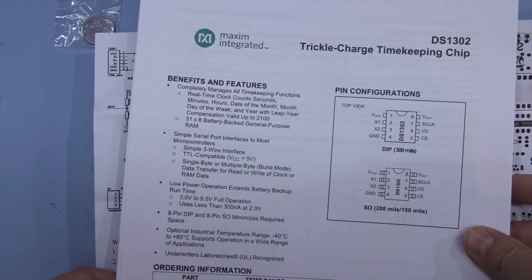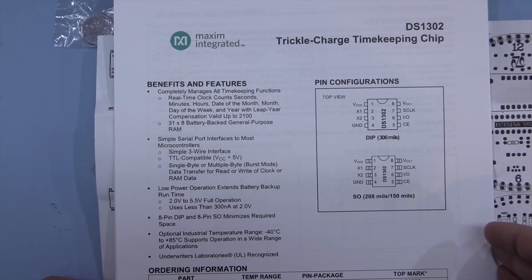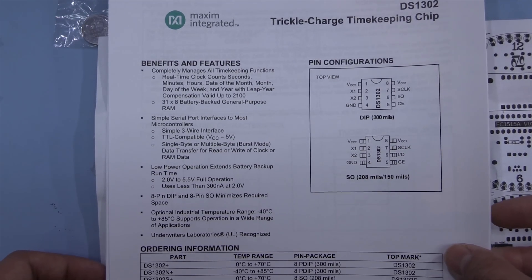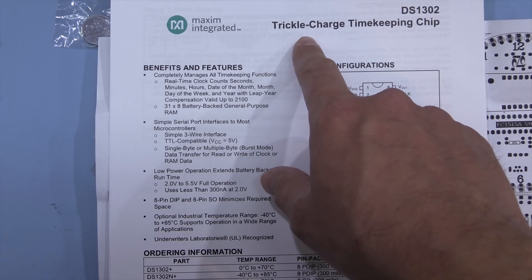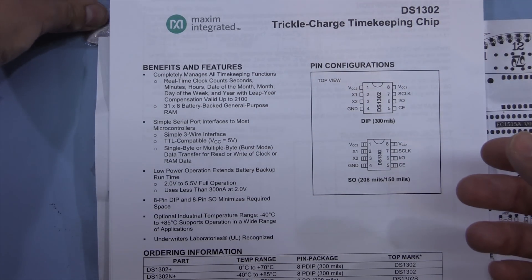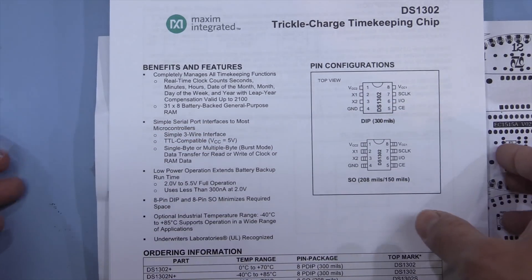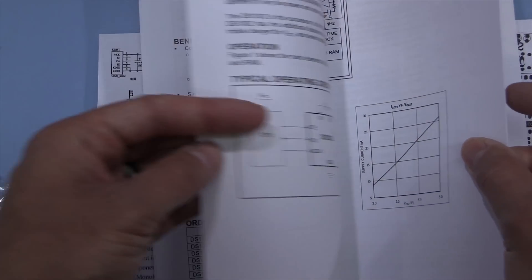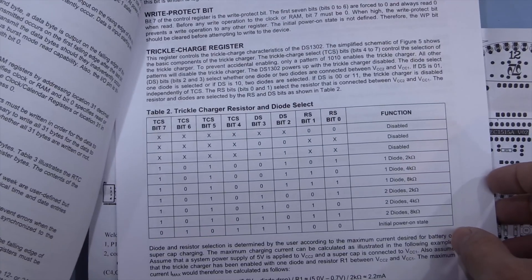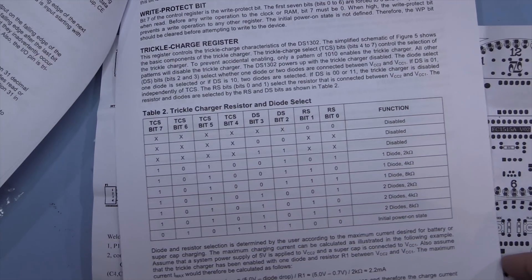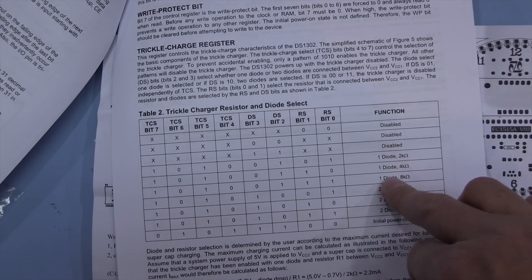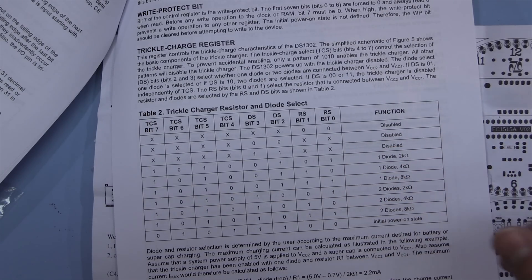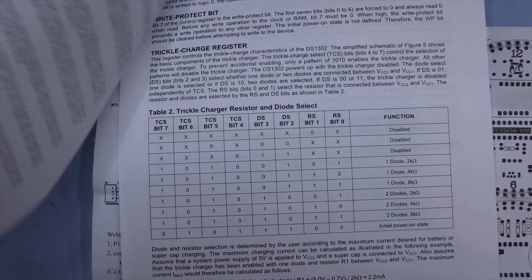So the DS1302 from Dallas, now Maxim of course, is quite a reasonable timekeeping chip. You'll also note it says here it's a trickle charging timekeeping chip. Obviously that's not used on this lithium coin cell but there's a couple of registers that you can use to set the charging current and you can use that to keep something like a nickel metal hydride battery fully charged while it's powered up or maybe a super capacitor and it just kind of puts in some series resistors just to limit the charging current which is quite a nice little addition.